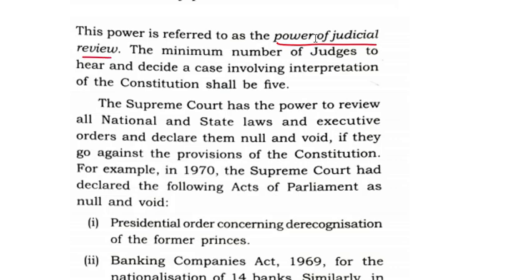The minimum number of judges to hear and decide a case involving interpretation of the Constitution shall be five. The Supreme Court has the power to review all national and state laws and declare them null and void. They can consider any of the laws passed in any state assembly or in parliament, and if they find those laws are not correct or go against the provisions of the Constitution, they can make them null and void.